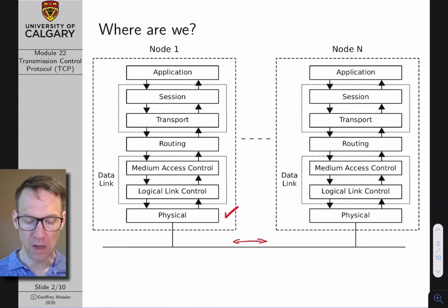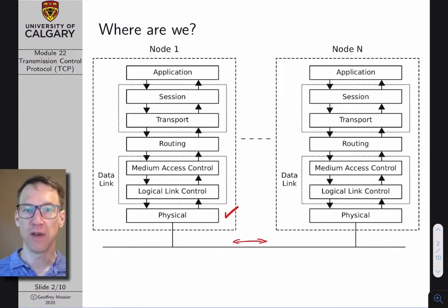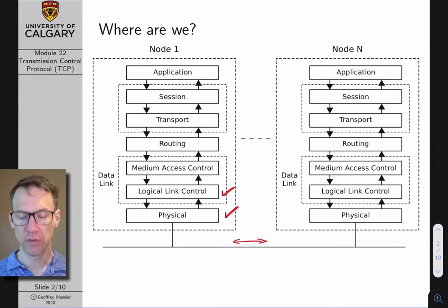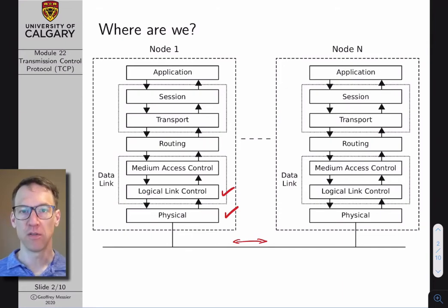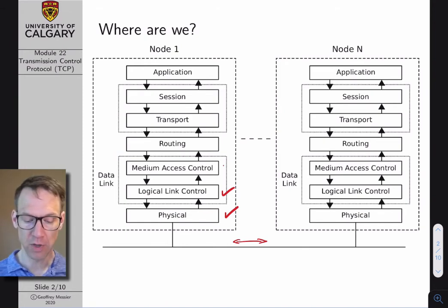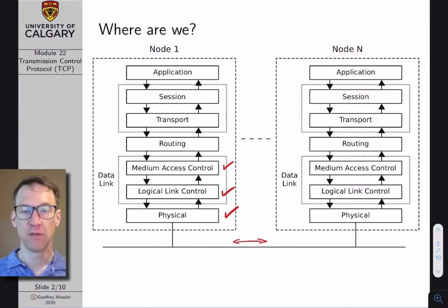We then spent a fair bit of time talking about the data link layer, or layer two, which is divided into two sub-layers. The logical link control layer is where we introduced error detection as well as ARQ — basically the retransmission of bad frames to give the appearance that our error-prone link is actually error free. The next big topic was the medium access control layer, where we implement protocols necessary to manage many nodes competing for a shared channel.